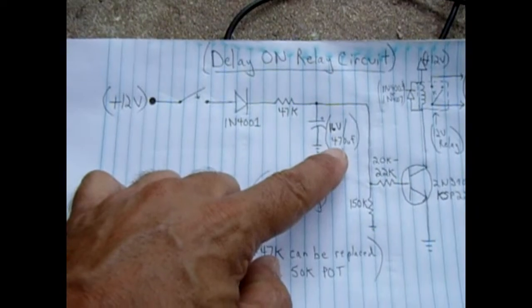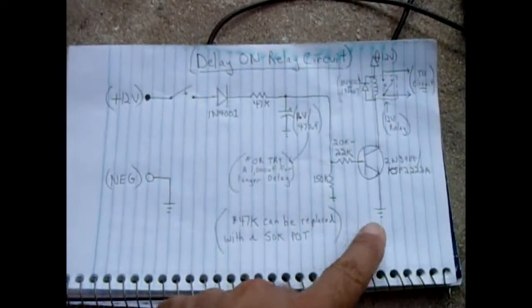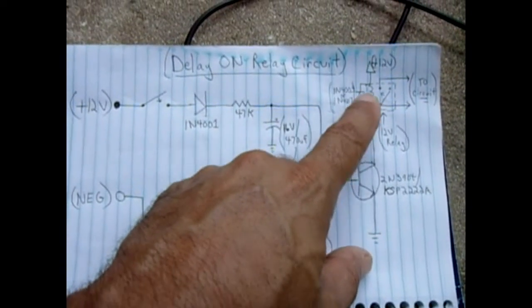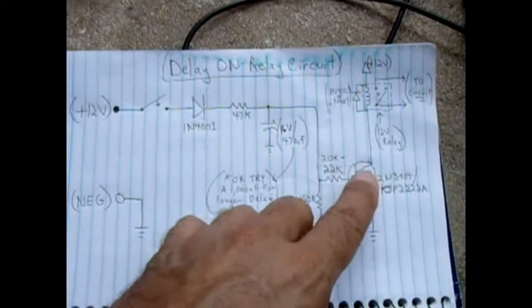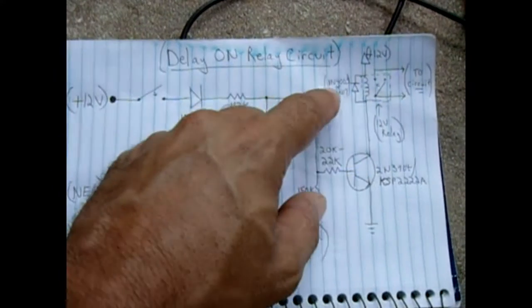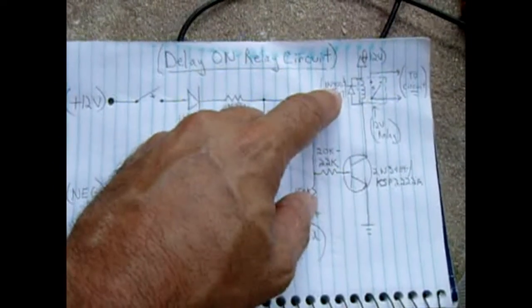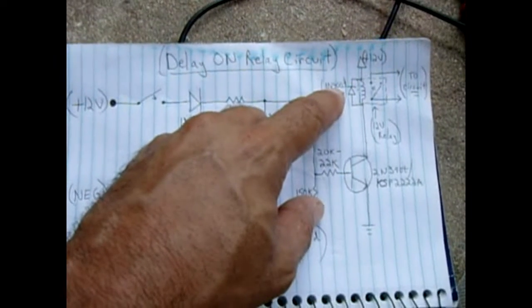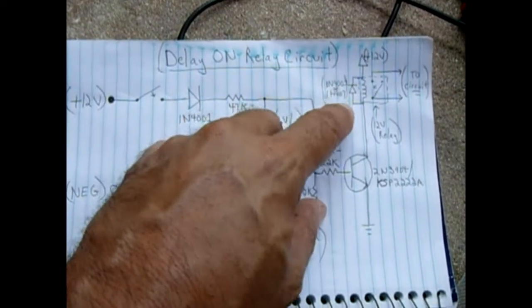The back EMF diode which protects the transistor from being blown could be a 1403 all the way up to a 4007. Some people were successful with smaller ones, 401s and 4002s, but I prefer to use a 403 and higher.